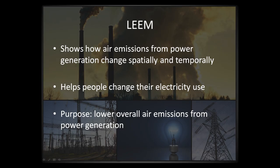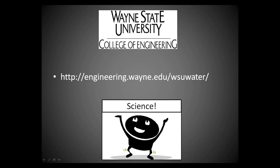The LMP Emissions Estimation Method reveals how emissions from our electricity use vary in time and space. With this knowledge, individuals, companies, and municipal utilities are empowered to change the way they use electricity, with the goal of overall lower air emissions. If you want to know more, please visit engineering.wayne.edu/WSU-water.